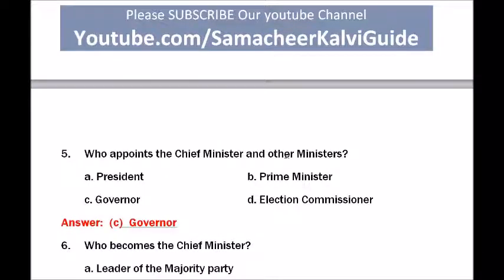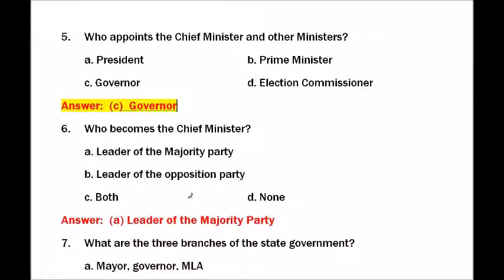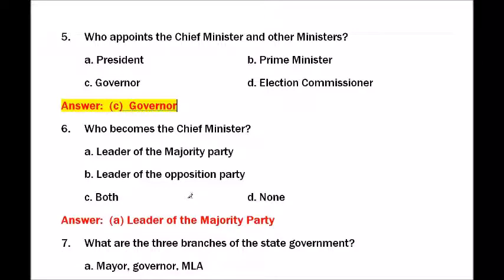Options for question five are president, prime minister, governor, or election commissioner. The answer is governor — the governor appoints the chief minister and other ministers. Question number six — who becomes the chief minister? Options are leader of the majority party, leader of the opposition party, both, or none.